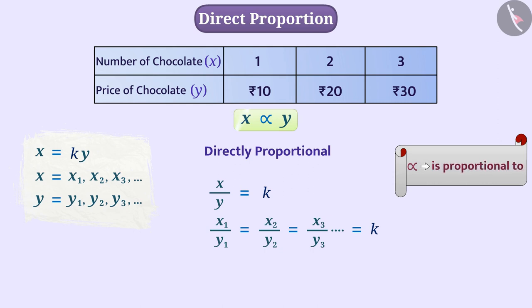In this way, we read the statement x is proportional to y. In this case, the number of chocolates is proportional to the price of the chocolate. Now, let us understand some situations involving direct proportion.